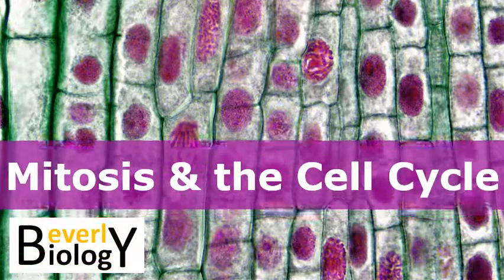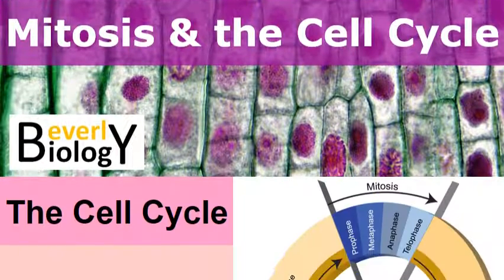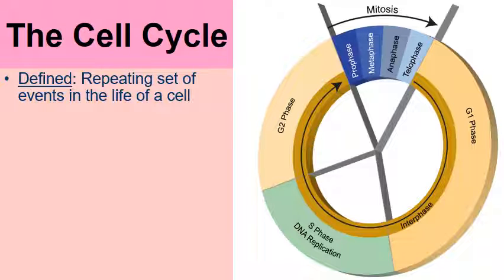The topic of this updated video is mitosis and the cell cycle. The cell cycle is the repeating set of events in the life of a cell. As cells are going through their life they're performing their functions, and every now and then they pause from those functions in order to perform a process known as mitosis.